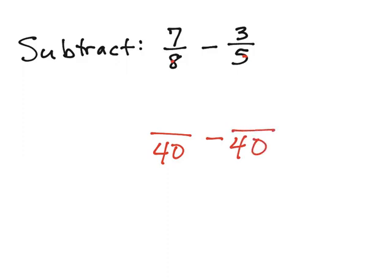So I'm subtracting. And now I'm going to create equivalent fractions. So on the left side, 8 times 5. Think about your denominator. 8 times 5 gives me 40.